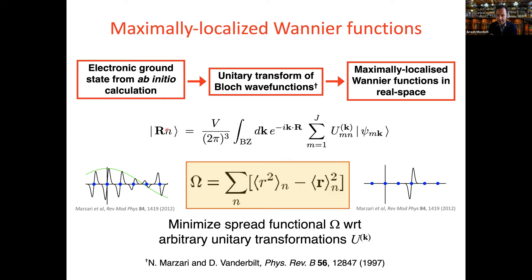This unitary matrix is non-unique, so there are many ways to construct a set of smooth Bloch-like states from the eigenstates of the Hamiltonian. With maximally localized Wannier functions, the way you choose which gauge you want is by minimizing the total quadratic spread of the set of Wannier functions that you're interested in. By minimizing this expression for the quadratic spread, you fix that non-uniqueness and choose a particular gauge. This is described in the original paper by Nicola Marzari and David Vanderbilt from 1997.